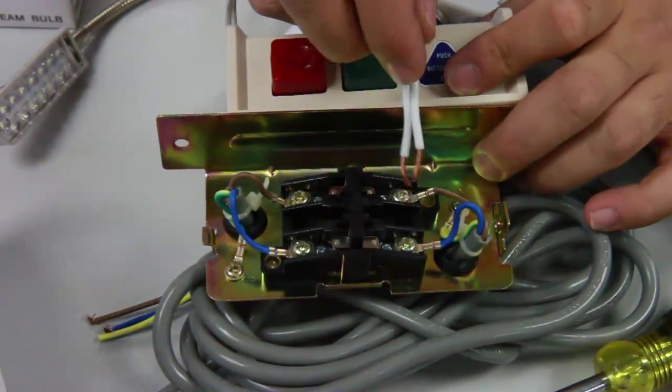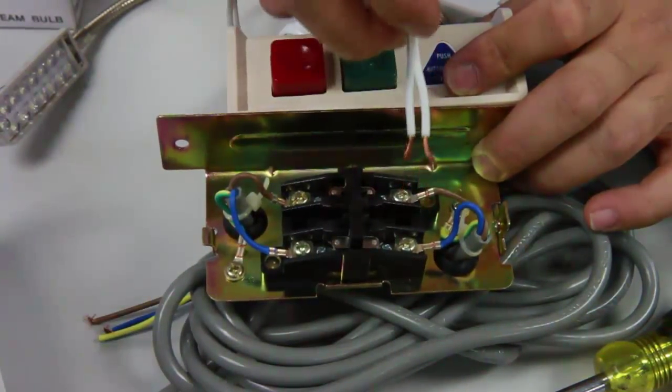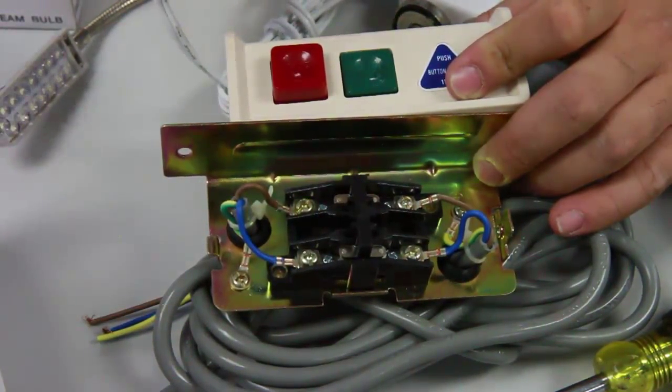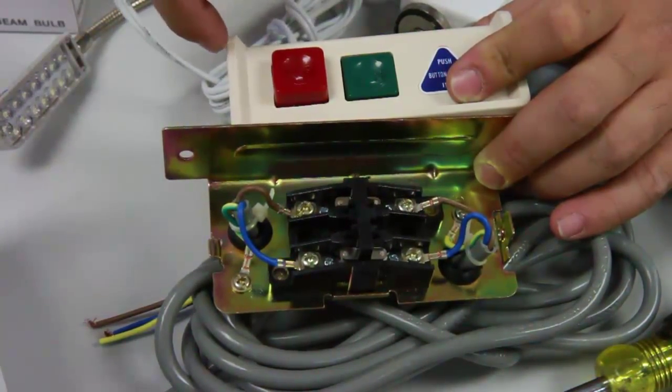If I connect over to the on side, the lamp will only work when I actually engage the on button, when the machine is on, and then I could use my lamp.